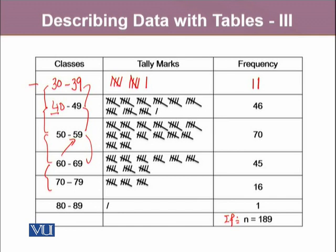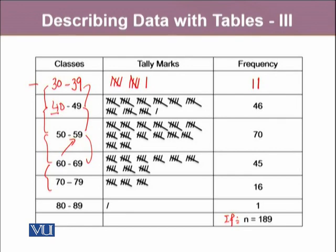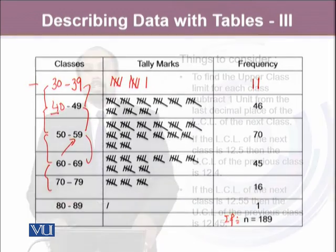One important consideration is that when we have quantitative data, each value has its own identity. But once we convert a quantitative variable into categories or classes, individual values lose their identity. For example, in the first class from 30 to 39, we only say there are 11 values, but we cannot tell from the distribution alone that specific values like 34, 37, or 38 are present without looking at the raw data.